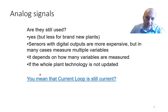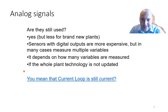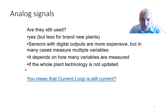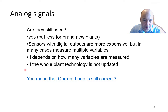Why are we still talking about analog signals — are they still used? Yes. The industry is conservative, which means these quite old analog signals are still used, though less so for brand new plants. If you are building a new factory from scratch today, you will most likely choose digital sensors or digital signals. On the other hand, digital sensors are more expensive.